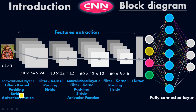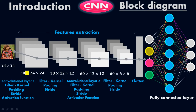Remember, an activation function is a must in artificial neural networks and also in CNN. It can be used in the hidden layer as well as the output layer. So in the first convolutional layer, we use the kernel, then padding, then stride with activation function. In the first layer we use 30 filters — 30 is the number of filters — with a size of 24 by 24.